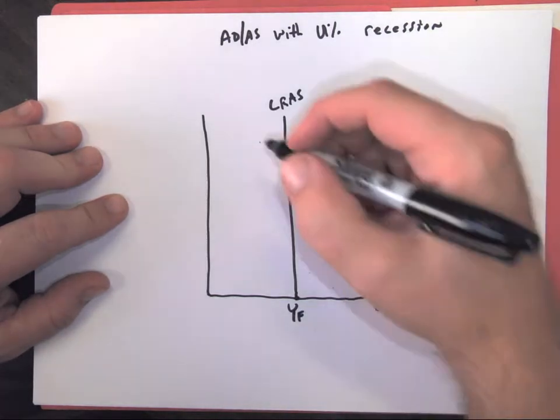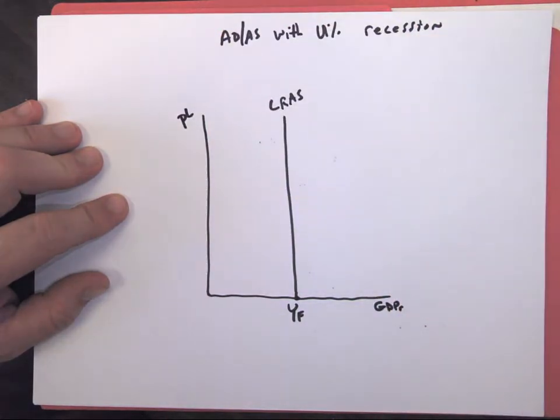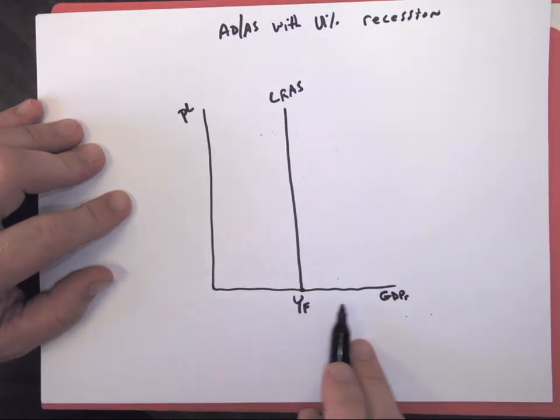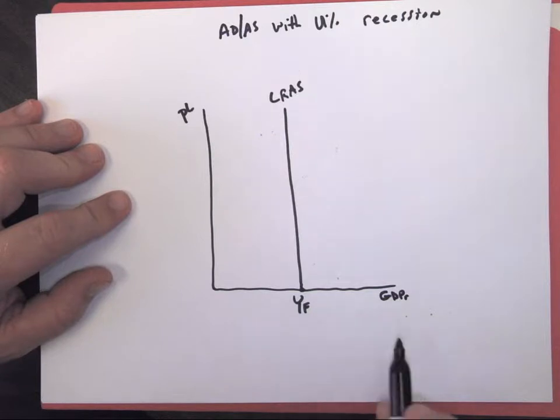Remember, it's real GDP, subtracted for inflation. Have our price level. Remember, we increase to the right and decrease to the left. So in a recession...